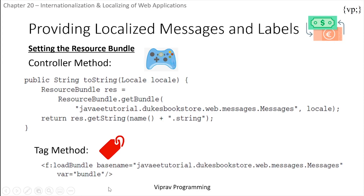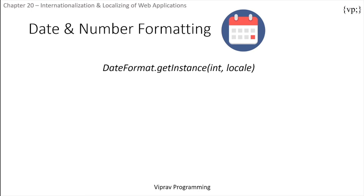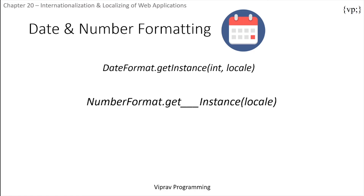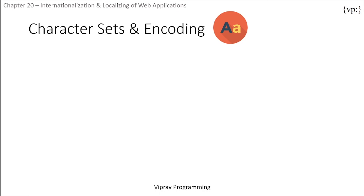For date and number formatting in Java programs, you can use DateFormat.getDateInstance with the locale to parse dates in a locale-sensitive manner. You can also use NumberFormat.getInstance with the locale, where the format type can be currency, number, or percent, to parse numbers in a locale-sensitive manner.